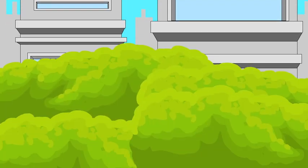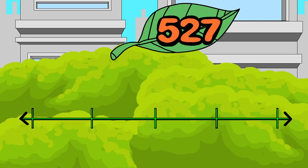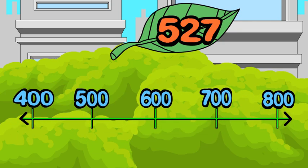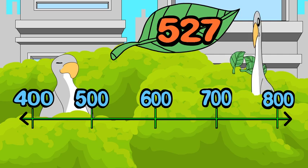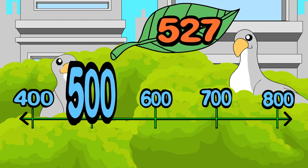You can round any number to the nearest hundred in four easy steps. Let's see how. Let's round 527 to the nearest hundred. Step one: figure out what benchmarks to use. 'To the nearest hundred' tells you to choose the hundred before 527 and the hundred after 527.